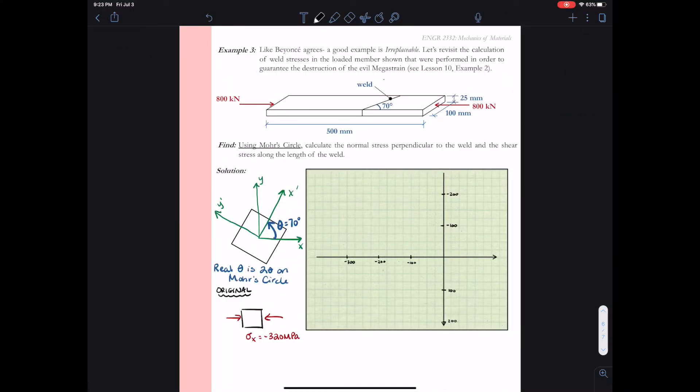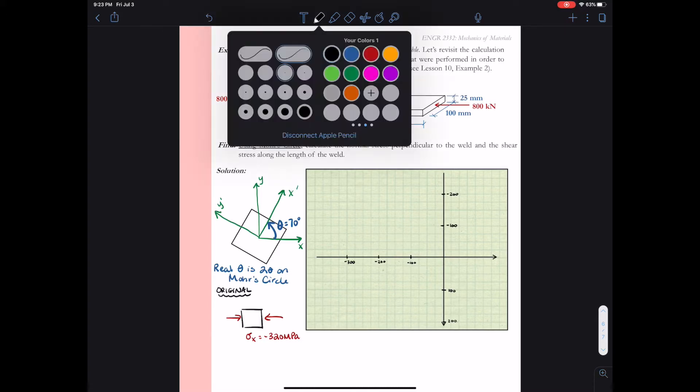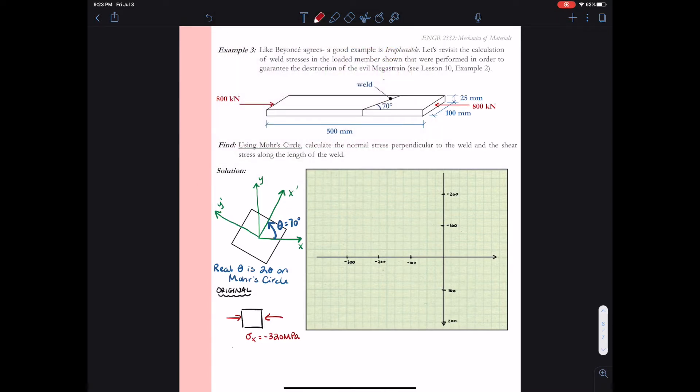Let's plot Mohr's Circle for the original element. We do it for the original element because we have a convenient coordinate system. It's easy to see that the compression sigma x is minus 320 megapascals and that sigma y and tau xy are both equal to zero. Step two was setting up our coordinate axis. We have sigma to the right and tau positive downward, and I've added values to give some scale. Every four blocks is 100 megapascals.